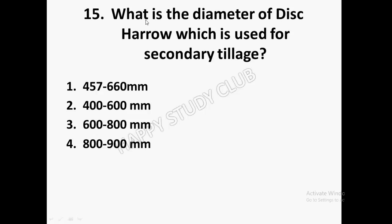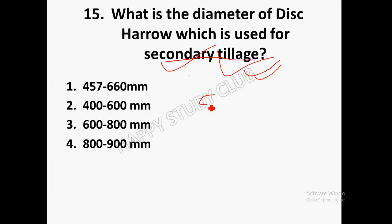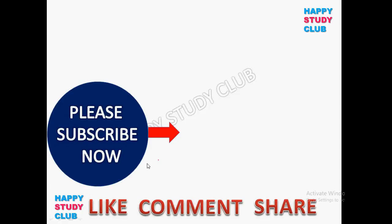Next: What is the diameter of disc harrow used for secondary tillage? Secondary tillage is done after primary tillage, with a main objective of leveling the soil surface. The answer is 457 to 660 mm.